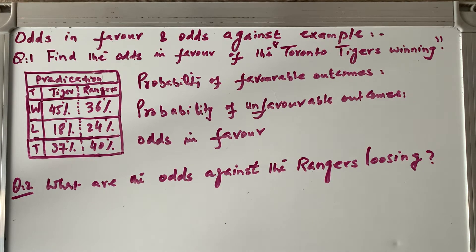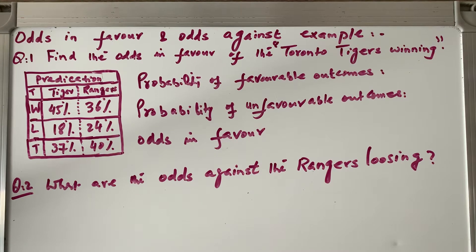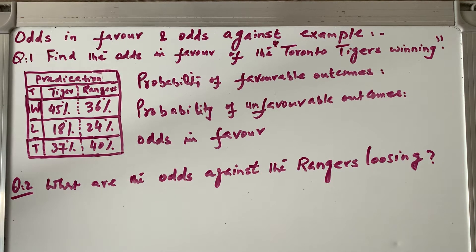Bismillah ar-Rahman ar-Rahim. Welcome to my channel, Learn Math with Sayyad Ali. Continuing our topic of odds in favor and odds against: odds in favor compares the ratio of favorable outcomes to unfavorable outcomes, and odds against means unfavorable outcomes to favorable outcomes. This is how to get the odds in favor and odds against.